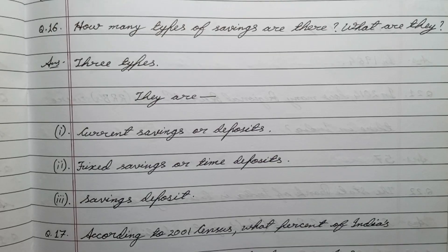Question number sixteen: how many types of savings are there and what are they? Answer: three types — one, current savings or deposits; two, fixed savings or time deposits; three, savings deposit.